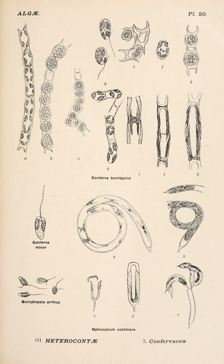Pascher recognizes six classes in Heterocontae: Class Heterochloridinae, Class Rhizochloridinae, Class Heterocapsinae, Class Heterococcinae, Class Heterosiphoninae.